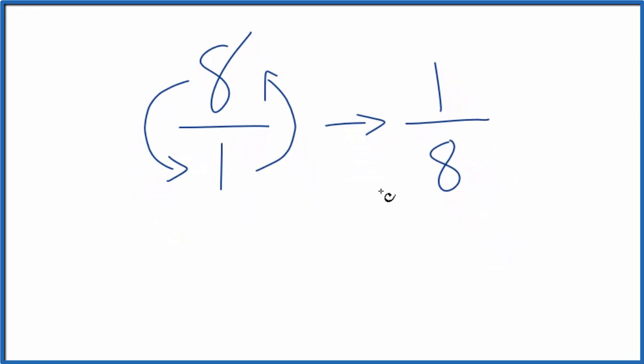But let's check our work. We could take the original number, that 8, let's call it 8 over 1, and multiply that by our reciprocal that we just found. If we multiply those and it equals 1, we did this first part correctly.